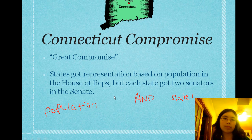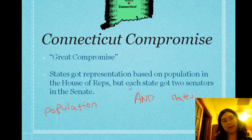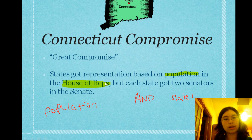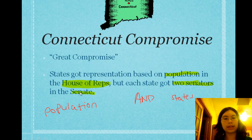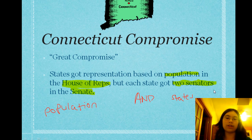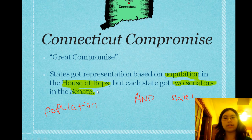States got representation based on population in the House of Representatives — population determines the House of Representatives. But each state got two senators in the Senate, no matter whether you were big or small, had a lot of people or not very many. You get the same number of senators, and remember, senators were more powerful. So population determines the number of representatives in the House, and you get two senators no matter what.